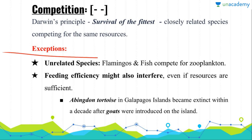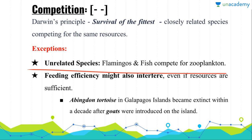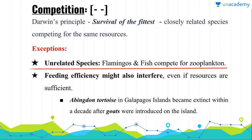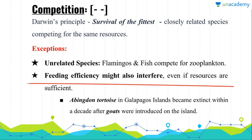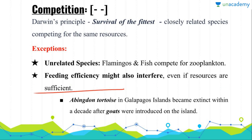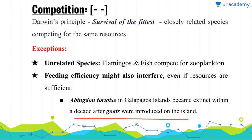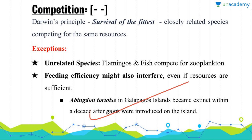There are a few exceptions as per recent studies. Even unrelated species can compete for the same resources — for example, flamingos and fish competing for zooplankton in a pond. Feeding efficiency may also interfere even when resources are sufficient. When goats were introduced in the Galapagos Islands, the Abingdon tortoise became extinct within a decade because goats are very efficient grazers.